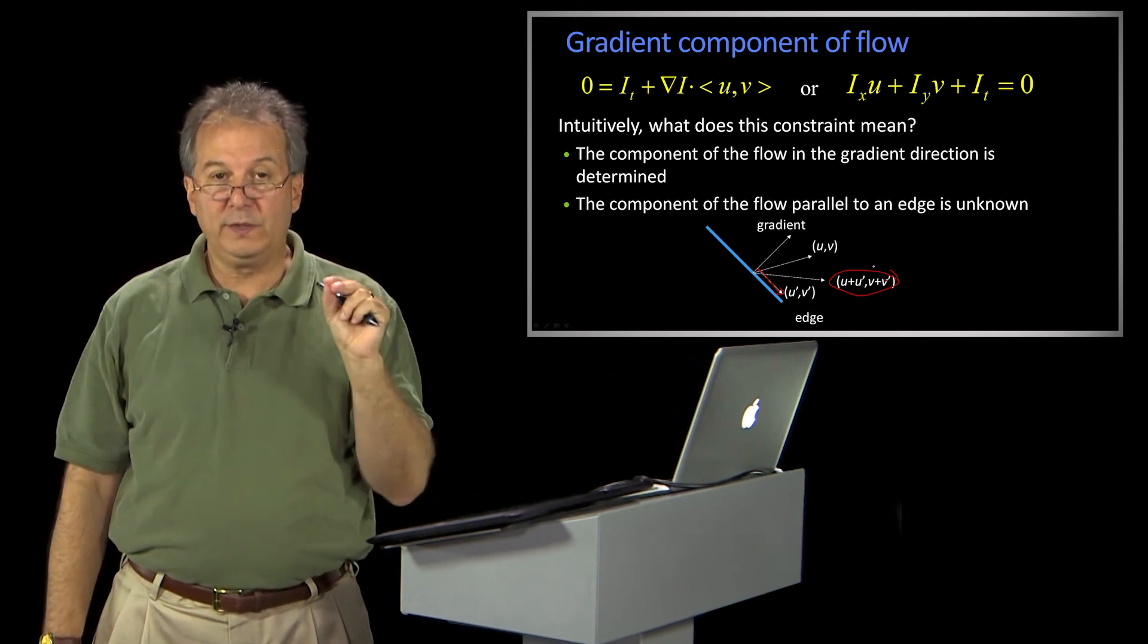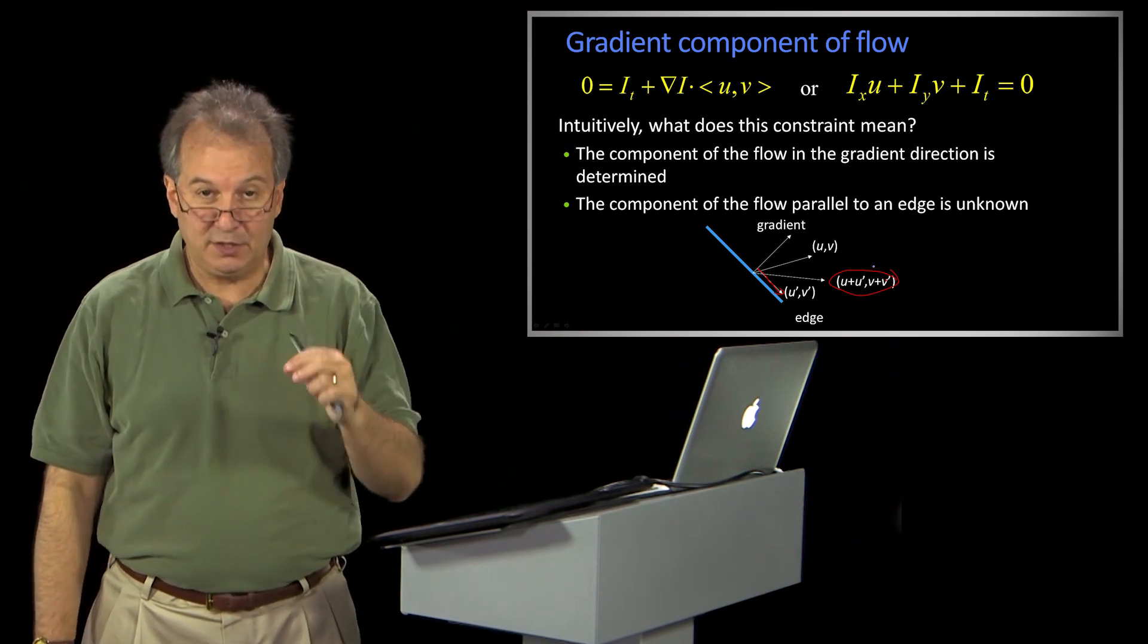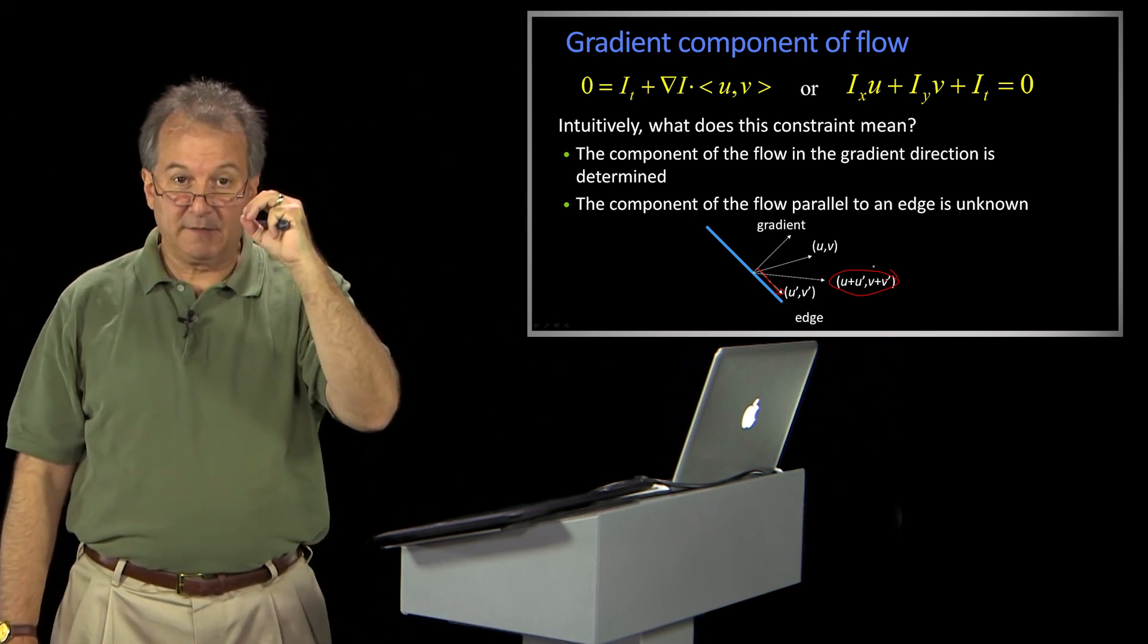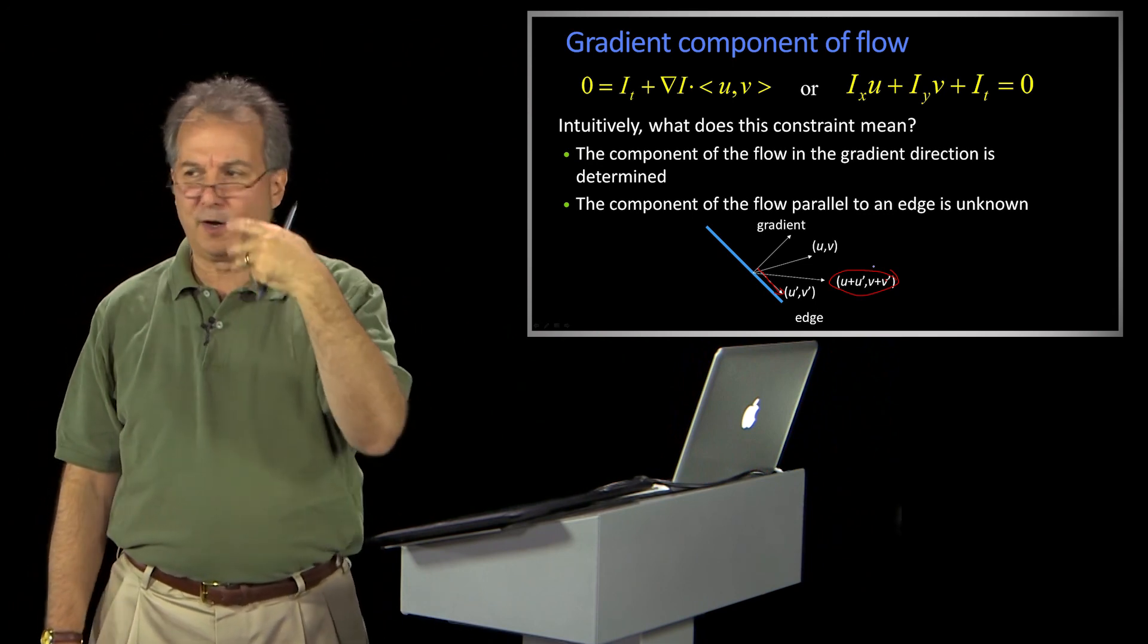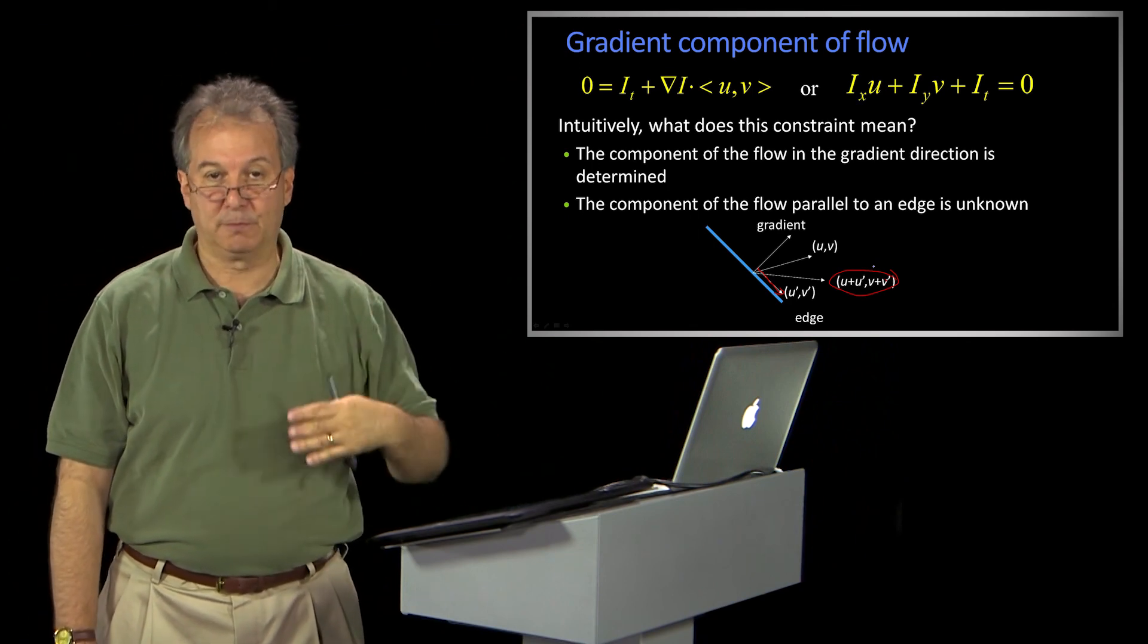Locally, we can only tell the amount of motion that is perpendicular to the edge in a little area. When you think about this little area, you can think of it like looking through a little hole. Remember from our talk about cameras that that's called an aperture? And this general problem, this is called the aperture problem.